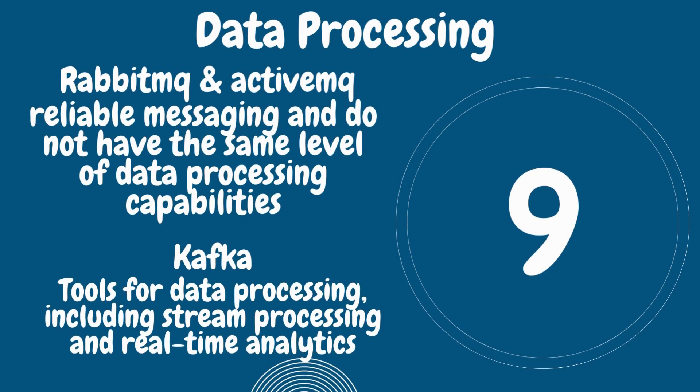Number nine is data processing. Kafka provides a rich set of tools for data processing including stream processing and real-time analytics. RabbitMQ and ActiveMQ are primarily focused on reliable messaging and do not have the same level of data processing capabilities.